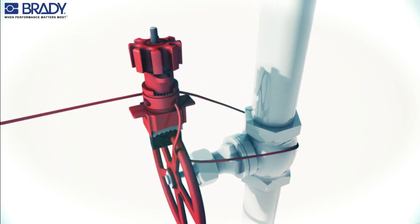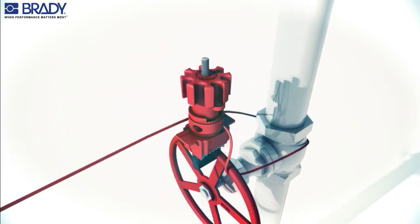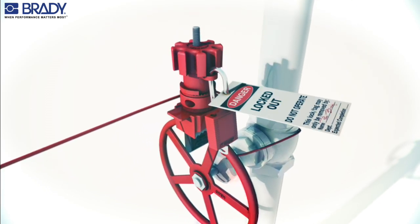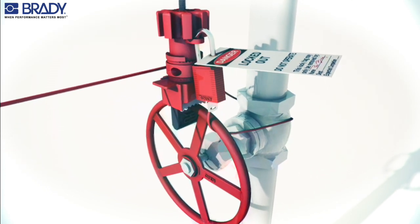Then turn the handwheel clockwise, tightening both the clamp and the cable. Insert the padlock through the locking hole to secure in the locked position.